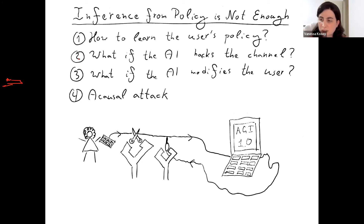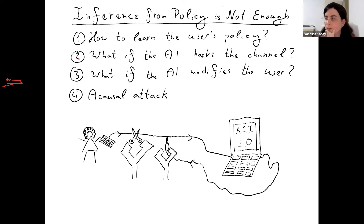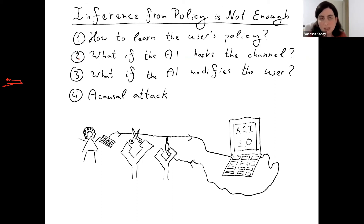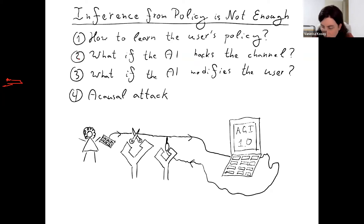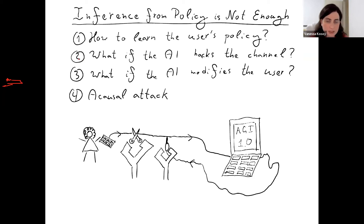It's important to understand that inference from policy alone is not enough. Even if we have a principle for inferring loss functions from policies, there are core difficulties remaining in the alignment problem. In particular, how do we even know the policy in the first place? You can make some observations of what the user is doing, but that doesn't give you the entire policy — it just gives you observations that might or might not contain enough information.